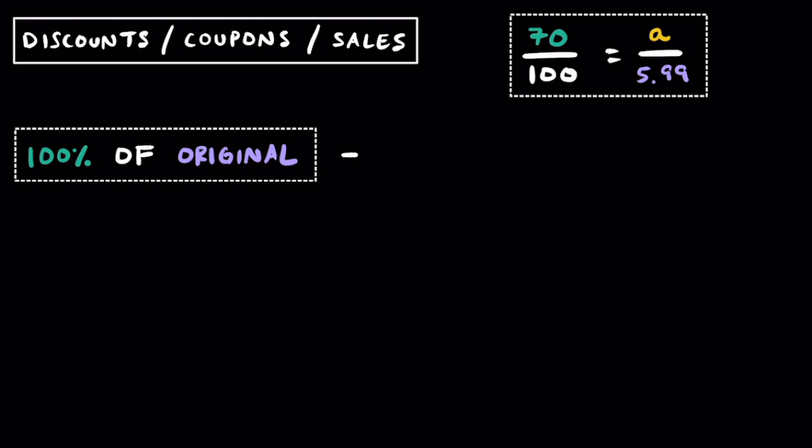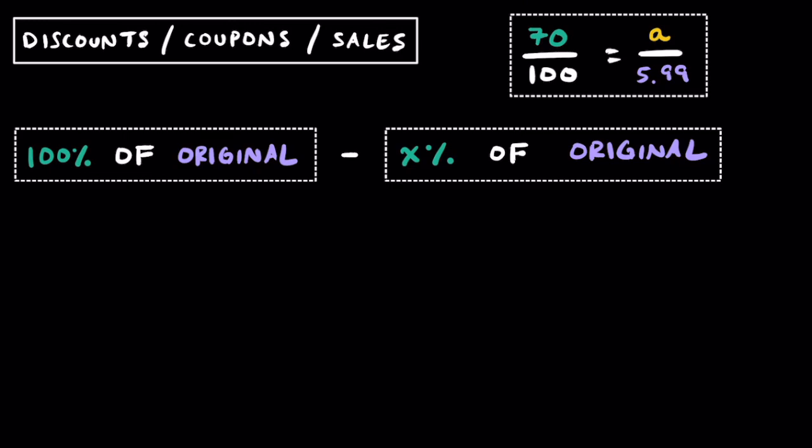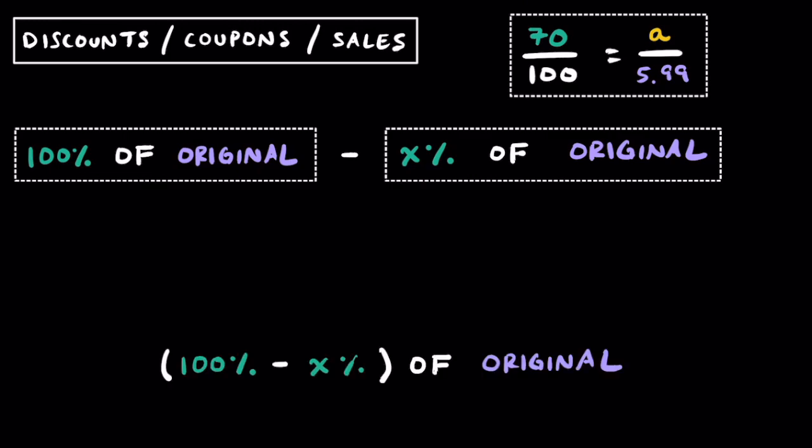Long story short, when you're talking about discounts, coupons, or sales, you have 100% of the original cost and you subtract some discount of the original. Seeing how the original shows up in both terms, we can use the distributive property and say this is 100% minus x% multiplied by the original cost. That's why when you had a 30% off coupon, 100% minus 30% means we can just multiply 70% of the original amount to get the final cost.